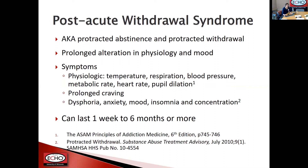Even after acute withdrawal is over, many patients describe continued uncomfortable symptoms referred to as post-acute withdrawal, protracted abstinence, or protracted withdrawal. There's more literature on this for alcohol use, but it occurs in opioid use as well. It's essentially a prolonged period of alteration in physiology and mood — including temperature control, respiratory rate, blood pressure, heart rate, and pupil dilation. Patients can also describe prolonged cravings, dysphoria, anxiety, low mood, insomnia, and concentration issues, and these symptoms can last for weeks to months or even longer.